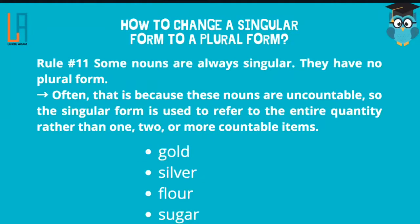Rule number eleven: some nouns are always singular — they have no plural form. Often this is because these nouns are uncountable; they are things you cannot count. The singular form refers to the entire quantity rather than countable items. For example, gold — you cannot say golds; silver, flower, and sugar. Because they cannot be counted, you cannot say two golds or two silvers. It's just gold, silver, flower, and sugar.